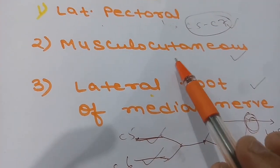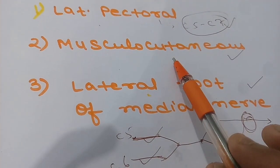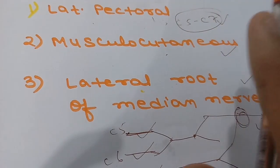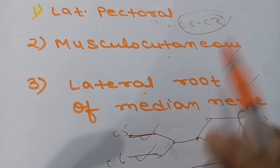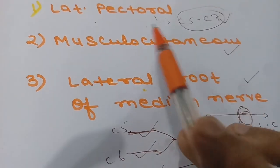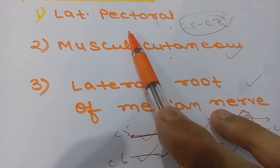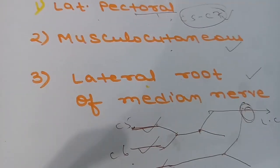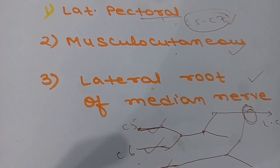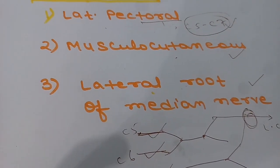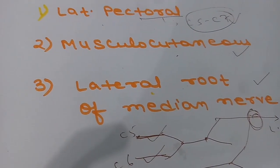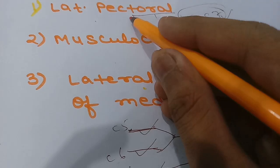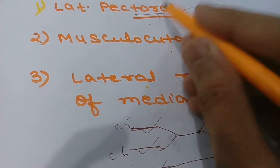The lateral pectoral nerve, as the name indicates, supplies the pectoral muscles — that is, pectoralis minor and pectoralis major.